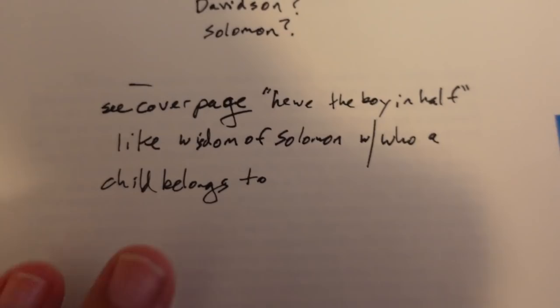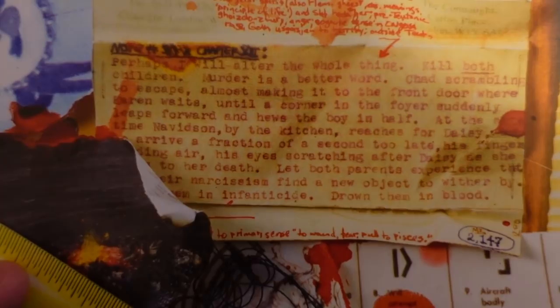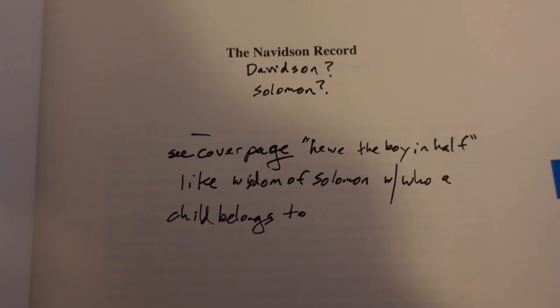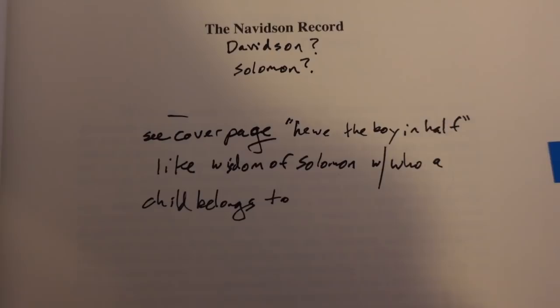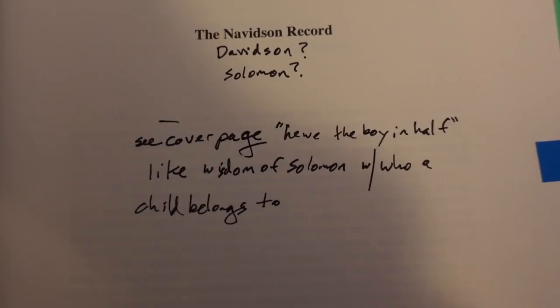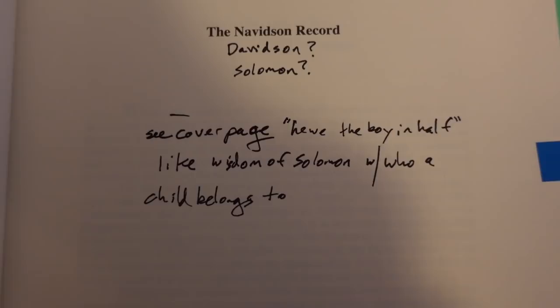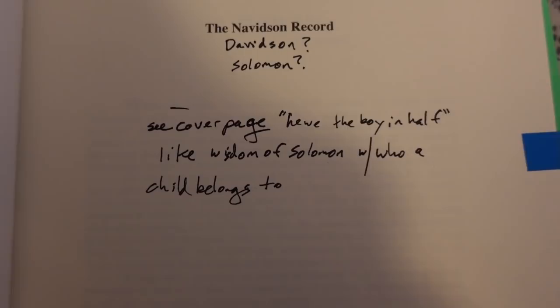The cover page has this note about 'Hugh the boy in half.' If Navidson is intended to be like Solomon, there's a story in the Bible where Solomon — who's supposed to be super wise — has two women arguing about who an infant belongs to. His recommendation is just to cut the baby in half and give half to each woman. The real mom is discovered because she refuses: 'Don't do that, give it to her.' So it's interesting that his name seems related to Solomon, and the cover page references that story with a super creepy, demonic spin on it.